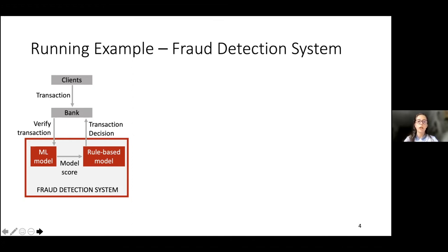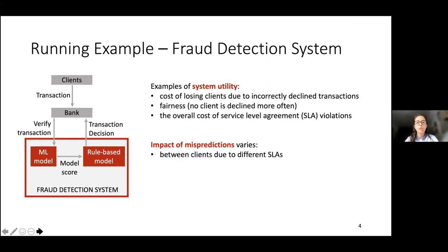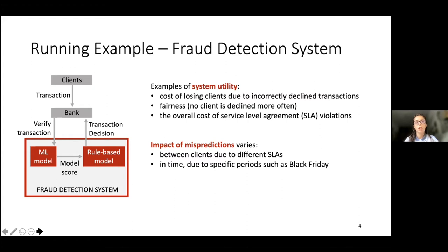In this context, there are different types of system utility that we can think of, and we give different examples in our paper. One example is the cost of losing clients due to incorrectly declined transactions. One additional challenge in this domain is that the impact of machine learning mispredictions is not constant. The impact depends on the clients, because different clients have different service level agreements. Also, depending on the time period — for instance, during Black Friday when there are a lot more transactions — the cost of incorrectly declined transactions is much higher.